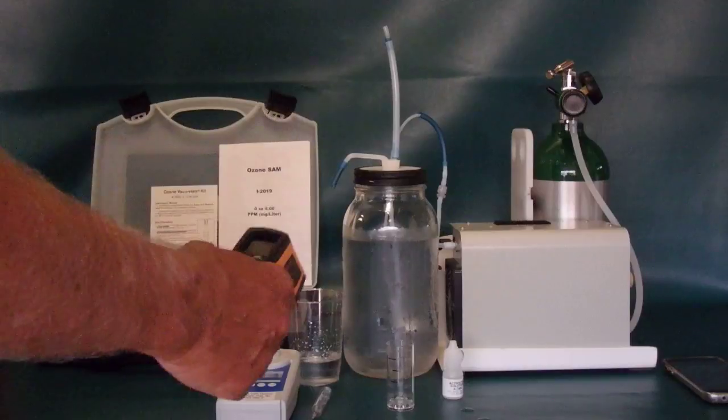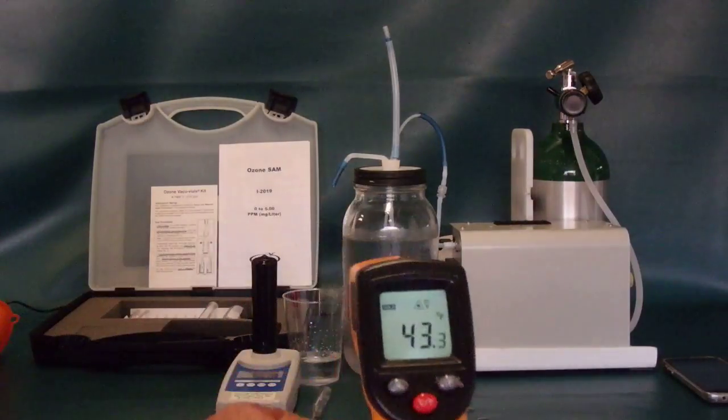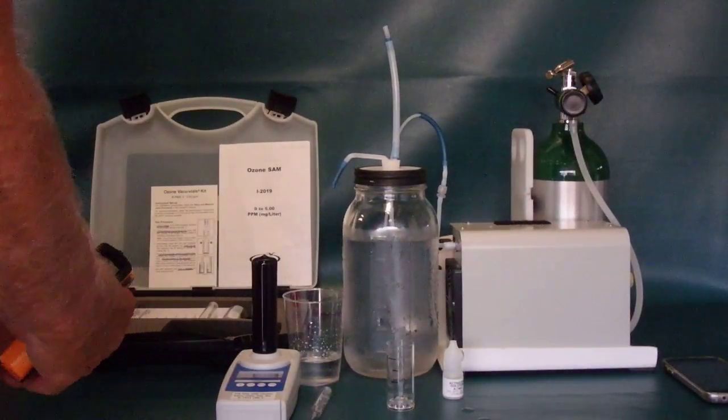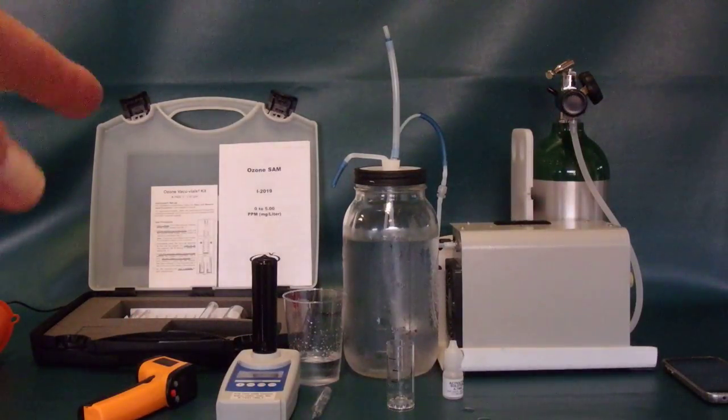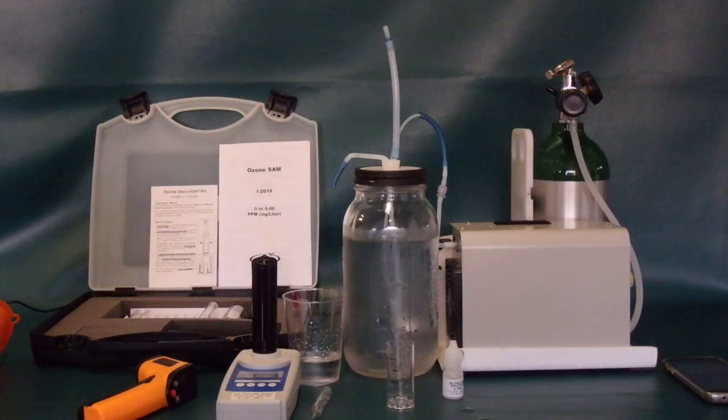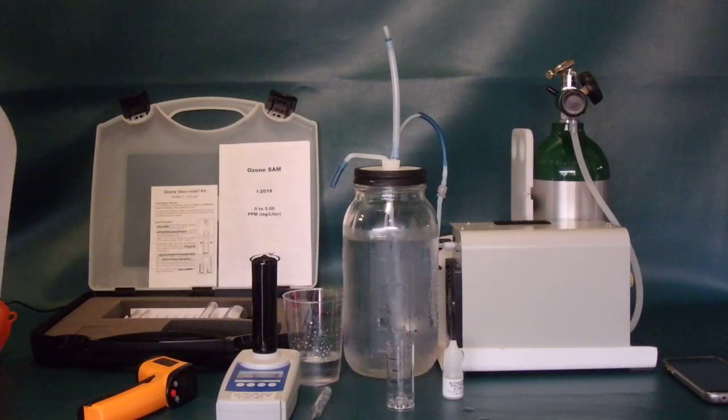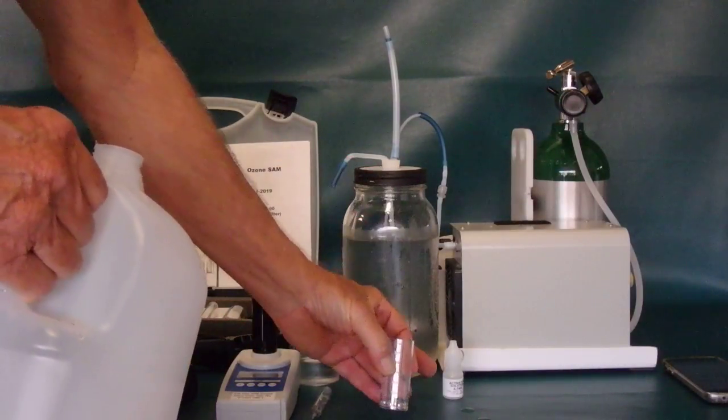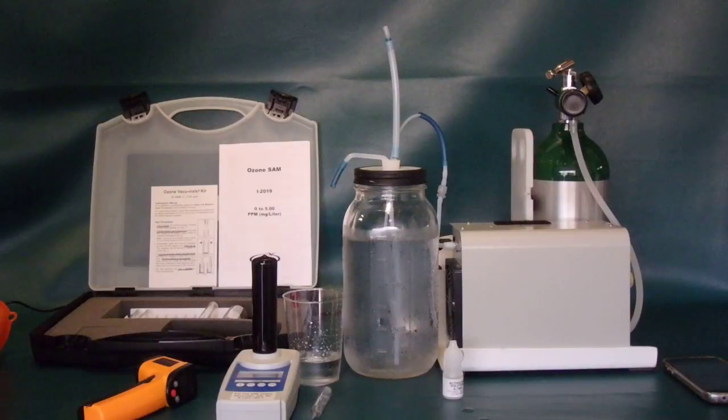We're now at three and a half minutes. And let's just check the temperature of the water. So it says it's 43.3 degrees Fahrenheit. We're now at four minutes. Another 30 seconds, we'll go ahead and load our distilled water in the vial there up to three-quarters full.